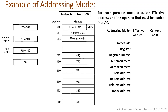In immediate mode, the operand is specified in the instruction itself. So the operand is at address 201 — that is where it resides in the instruction. The content fetched is 500. Basically, 500 is your operand because we specified it directly in the instruction, and it is located at address 201.